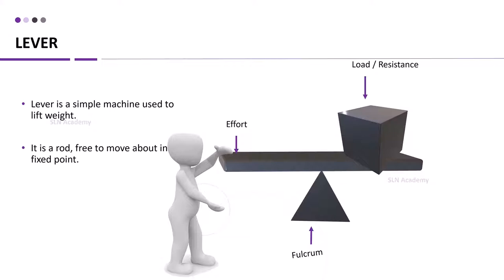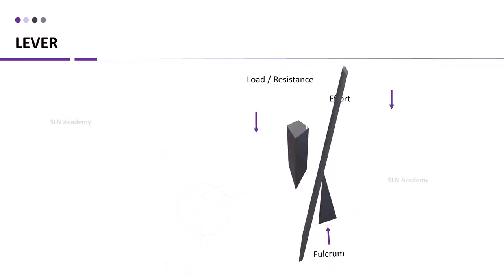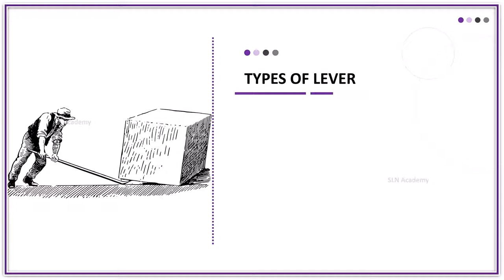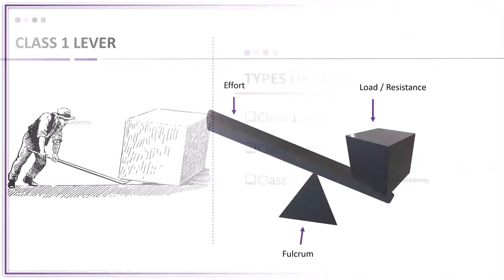Effort is applied on another end of the lever. It is not mandatory to have load at the right hand side. We can also show the same type of lever in this way as well. There are mainly three types of levers: class 1 lever, class 2 lever and class 3 lever.